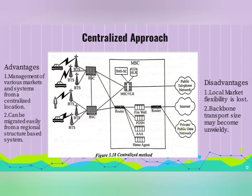The third approach is the centralized network. Its advantages are the management of various markets and systems from a centralized location. As seen in the diagram, centralized network components control all the elements present in the network, and it can be migrated easily from a regional structure. Disadvantages are that local market flexibility will be lost and backbone transport size may become unwieldy — that is, too large to organize.